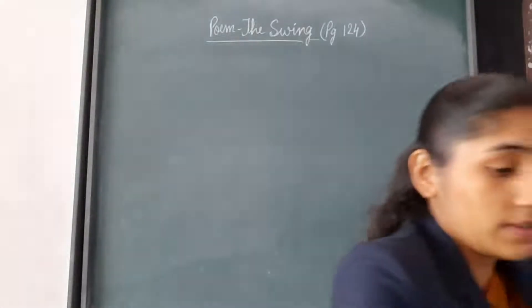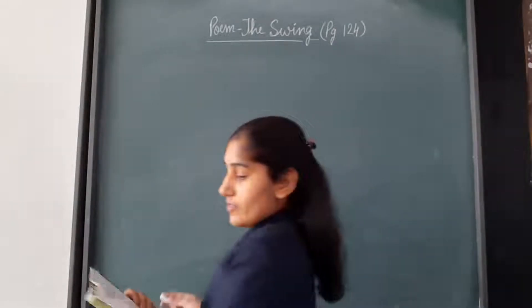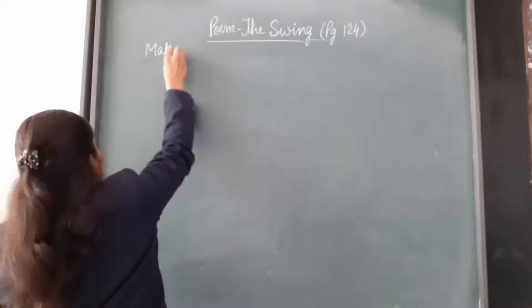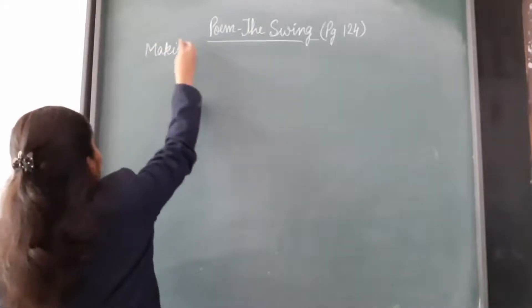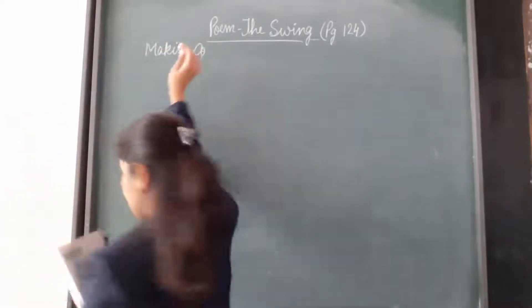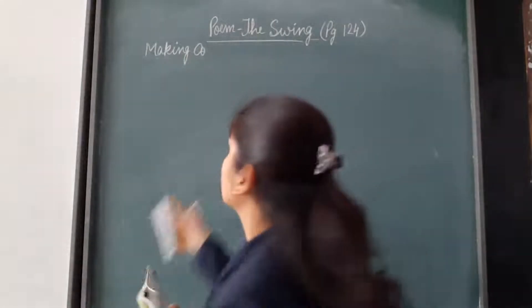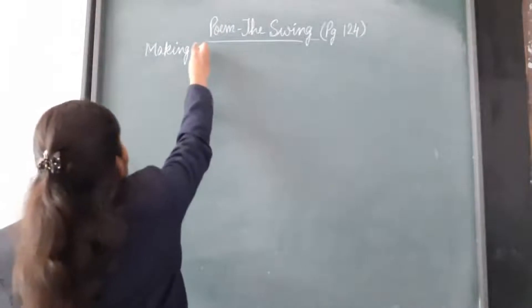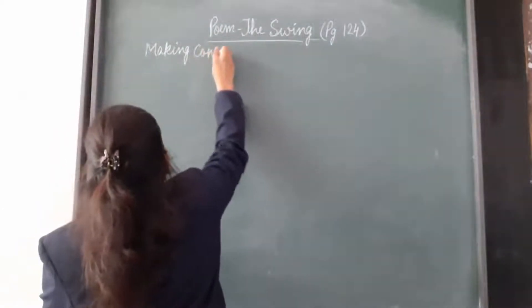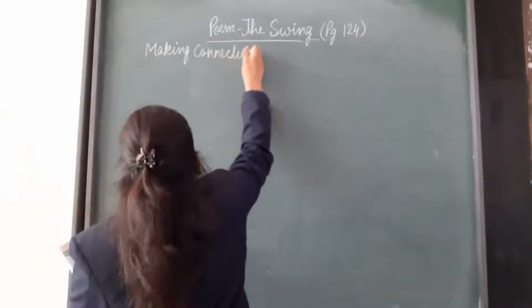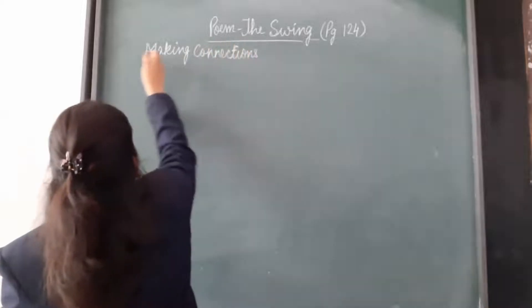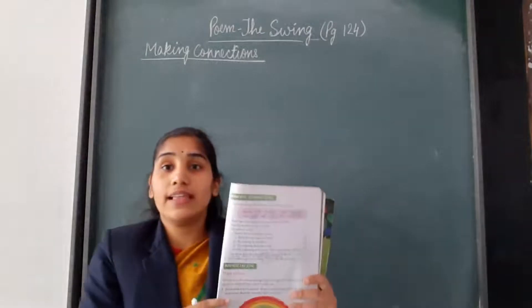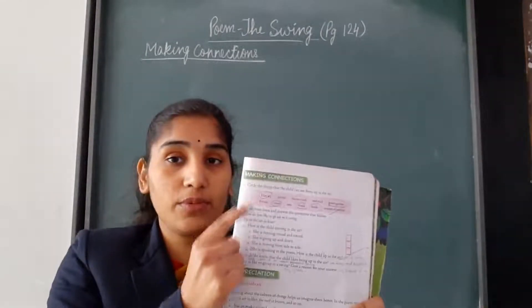So, let's come to page number 125 — Making Connections. Children, here are 4 questions. Let us begin from question number 1.